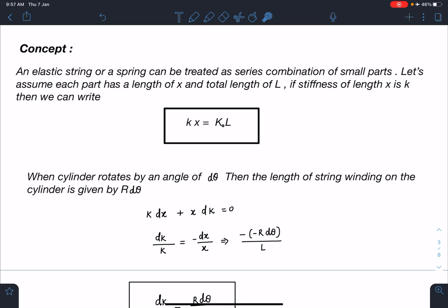As I have written here, an elastic string or a spring can be treated as a series combination of small springs. Let's assume each part has length x and total combined length L. If the spring constant or stiffness of length x is small k, then I can surely write that small k times the length of that part x equals k₀L. When you cut the springs, the k of each part and its length, its product is always going to be the same. This is the property of spring we are going to use.